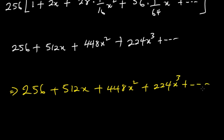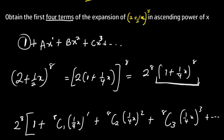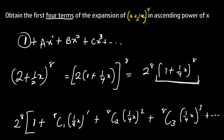This proceeds all the way to x^8. That is how we get the first four terms of a particular binomial expansion. After getting the question we factorize so that 1 becomes the first term, making the equation simpler to work with.